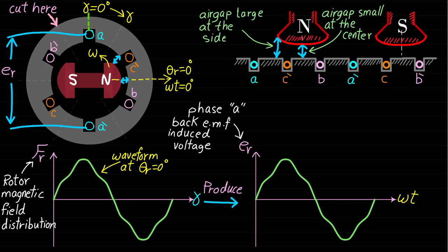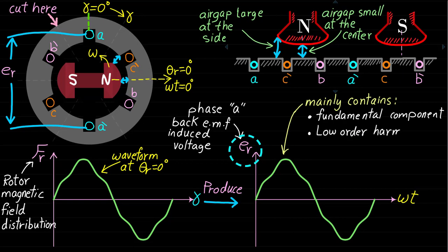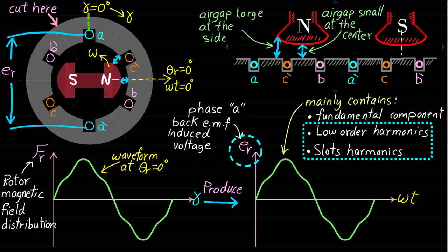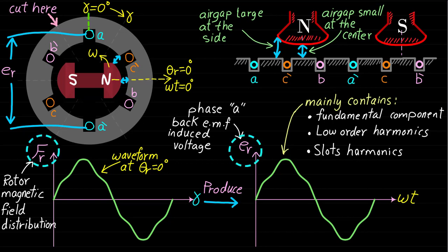As we can see, it is very clear that the induced back EMF voltage of phase A has been improved. However, the induced back EMF voltage ER will still have the low-order harmonic components and the slot harmonics. Note that the waveforms in these figures may not reflect the actual waveforms with all low-order harmonics, and the slot harmonics are not shown in these waveforms.